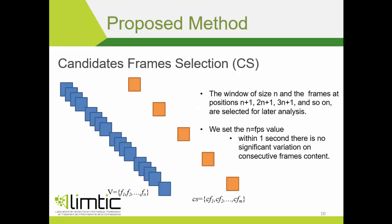The next frames to be included in the candidate set follow a windowing approach. We define a window of size N, and the frames at positions N+1, 2N+1, 3N+1, and so on are selected for later analysis. We set the FPS value for N because within one second there is no significant variation in consecutive frame content.